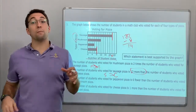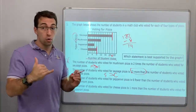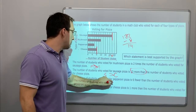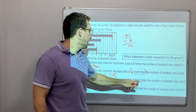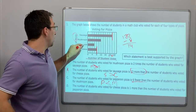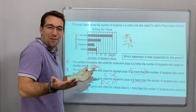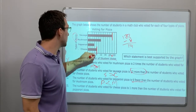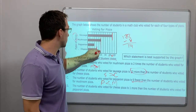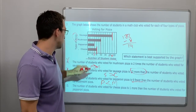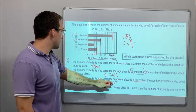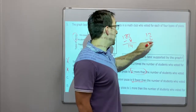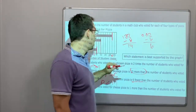Choice C: the number of students who voted for pepperoni pizza is 6 fewer than the number who voted for mushroom. Pepperoni is less than mushroom. Mushroom is 12 and pepperoni is 6. So 12 minus 6 equals 6 — that's correct!